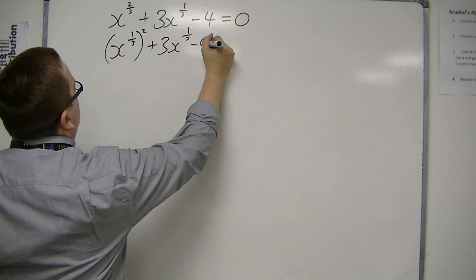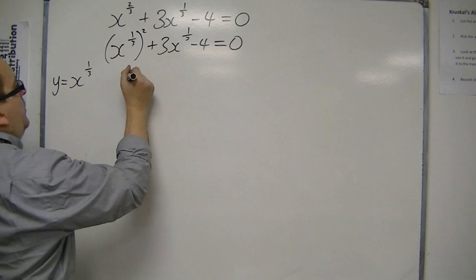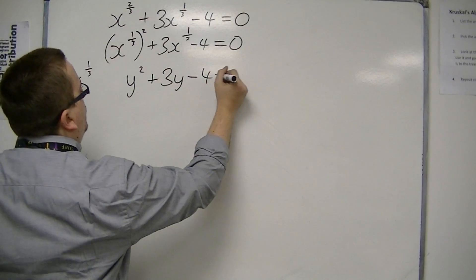Basically, because x to the 2 thirds can be written as x to the 1 third squared. So you might now have tweaked where this is going, because now I can make a substitution where y is x to the 1 third. So I have y squared plus 3y minus 4 is 0.